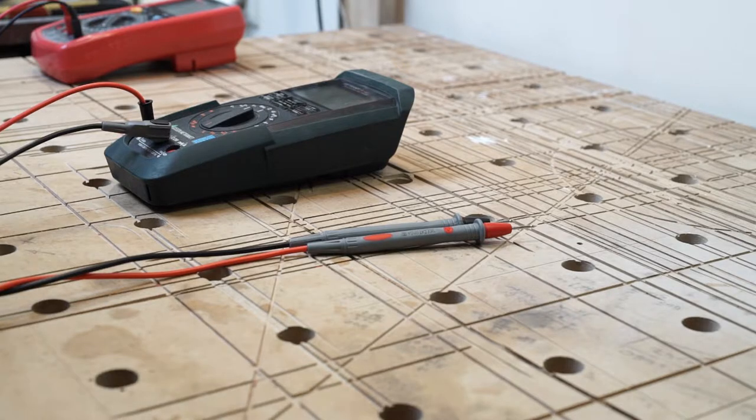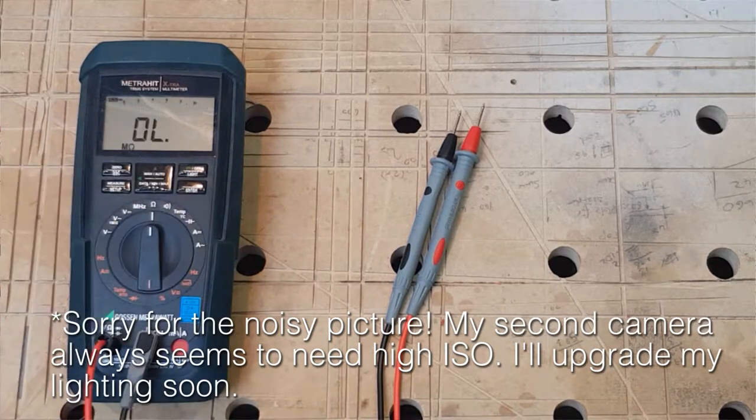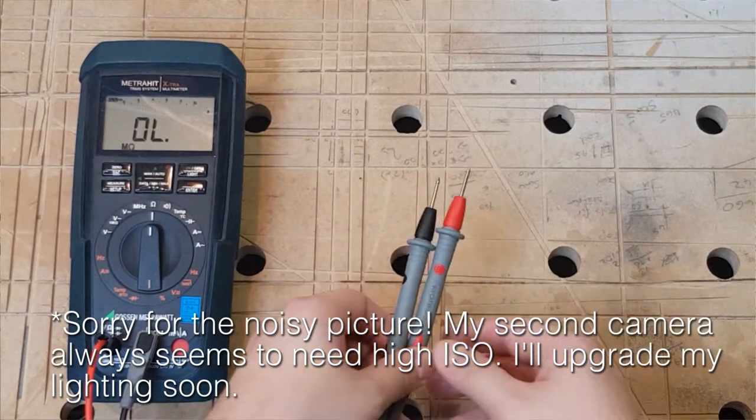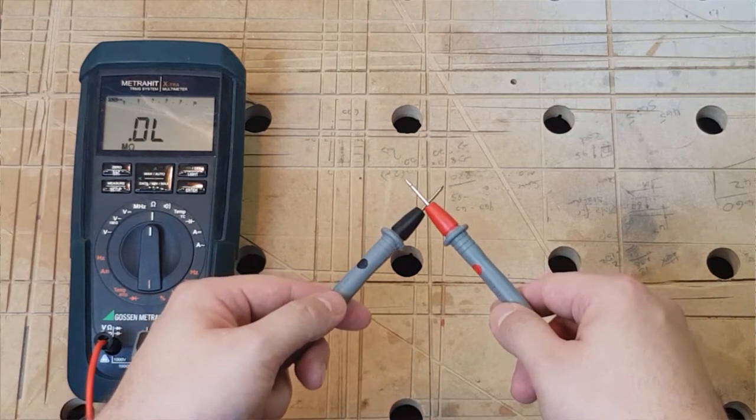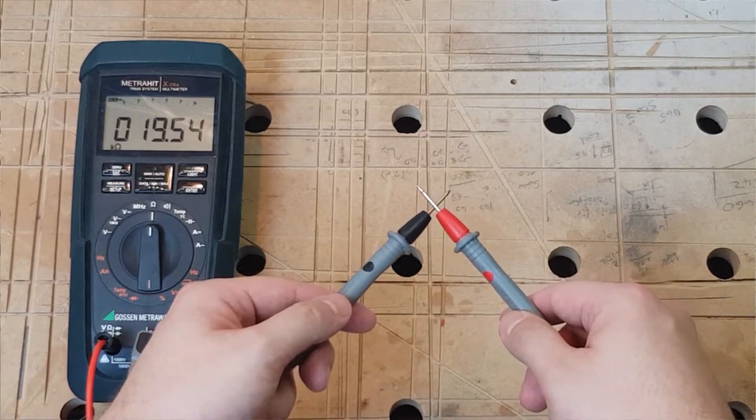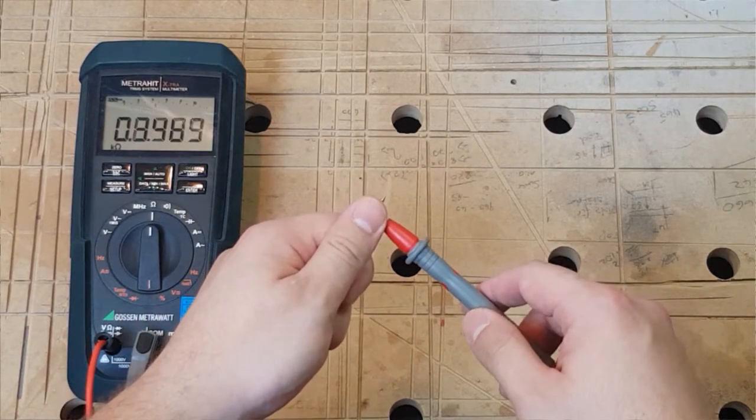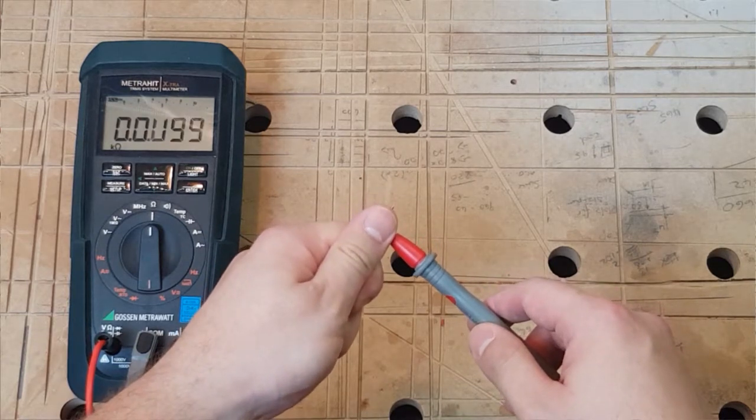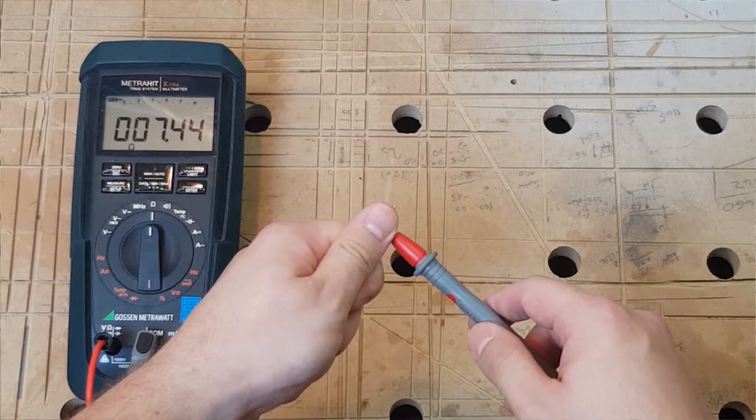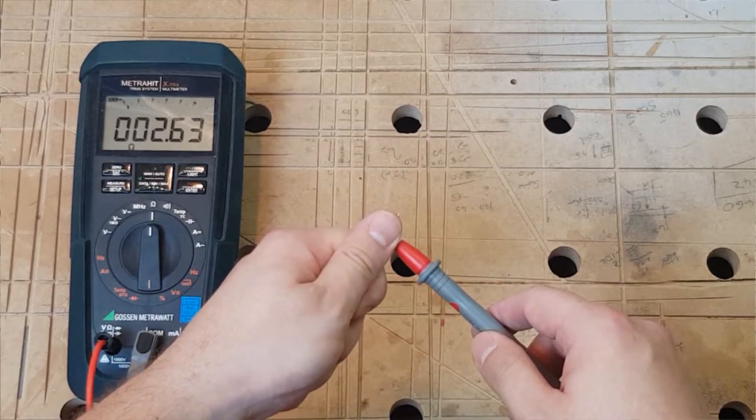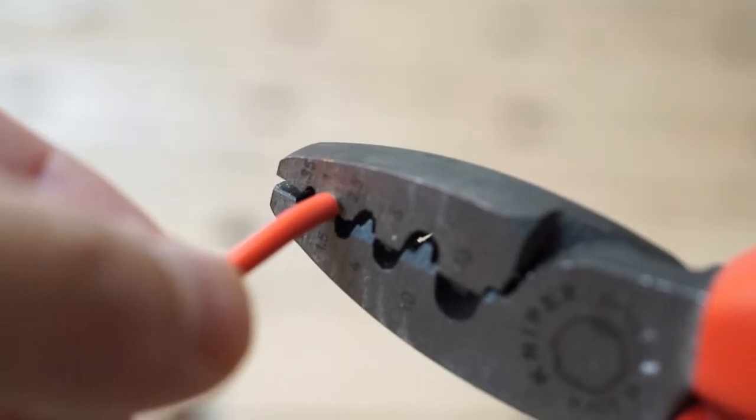The display didn't show constant readings, and if I put the probes together you will see. What is that? Even if I really push hard on the probes, I will get like four or five ohms. I don't know why. I've changed out the plug so it isn't the plug's fault.